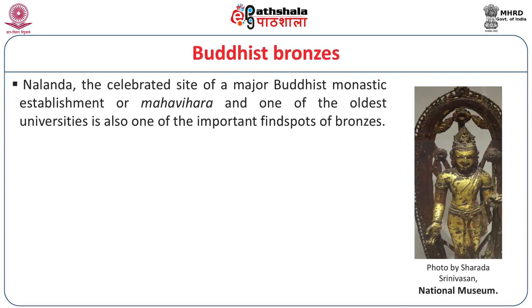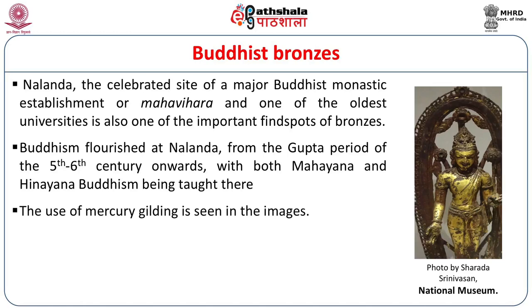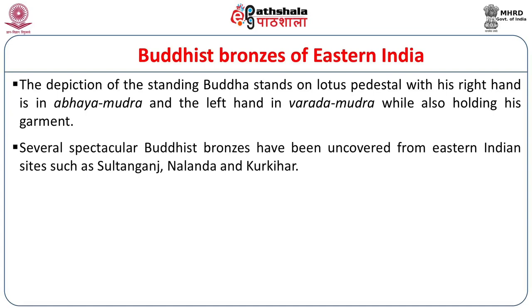We now come to the Buddhist bronzes of Eastern India and Southern India. Nalanda, a celebrated site of a major Buddhist monastic establishment and one of the oldest universities, is also an important findspot of bronzes. Buddhism flourished at Nalanda from the Gupta period of the 5th–6th centuries onwards, where both Mahayana and Hinayana Buddhism were taught. Mercury gilding was used on the images there. Northern Indian images are also quite often made of brass, an alloy of copper and zinc. In the Eastern Indian Buddhist bronzes, the Buddha stands on a lotus pedestal with his right hand in Abhaya Mudra and the left hand in Varada Mudra, and often he also holds the garment. The sites in Eastern India which have yielded bronzes include Sultan Ganj, Nalanda, and Kurkihar.